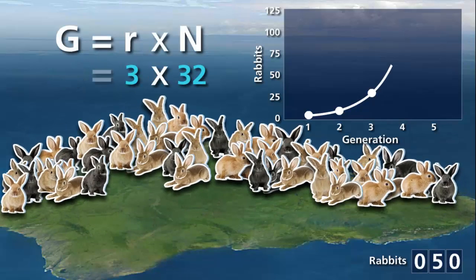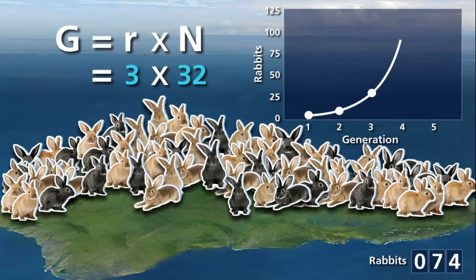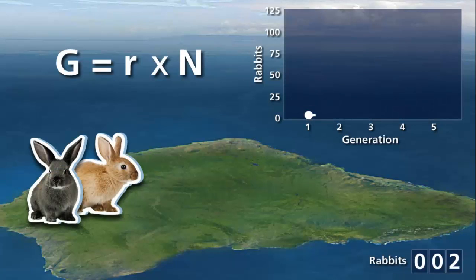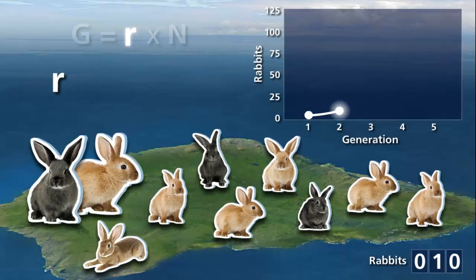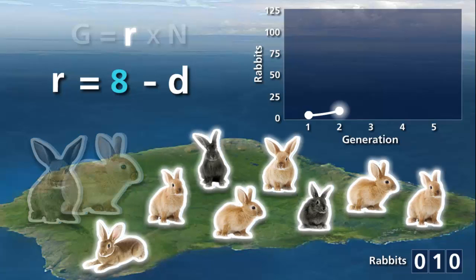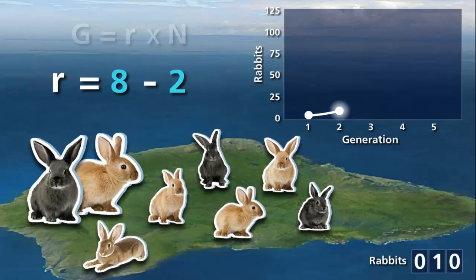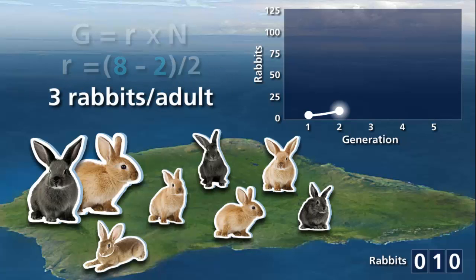Obviously, this cannot continue forever because other factors affect the growth rate of the population. The rate of growth can also be calculated as the birth rate, B, minus the death rate, D. Let's assume that the average litter of rabbits per mating pair produces 8 babies. Out of those 8, 2 do not survive to adulthood. The rate of growth per the original number of rabbits was 8 minus 2 divided by 2, or 3 babies per adult.